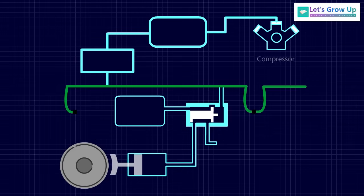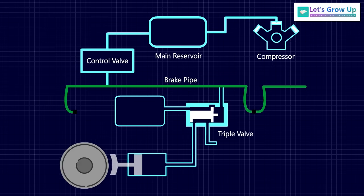The basic air brake system mainly consists of a compressor, main reservoir, control valves, brake pipe, triple valve, auxiliary reservoir, brake cylinder, and brake pads.